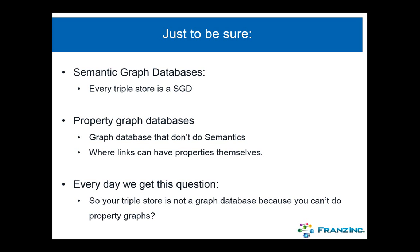The people in the property graph community try to point out that links can have properties themselves. We at AllegroGraph get this question every day: your triple store is not really a graph database, is it? Because you can't do property graphs?